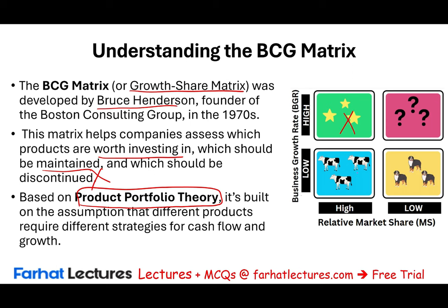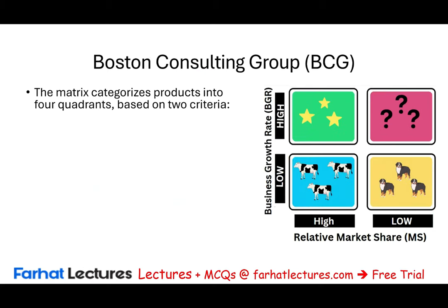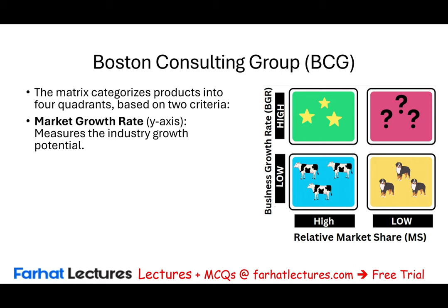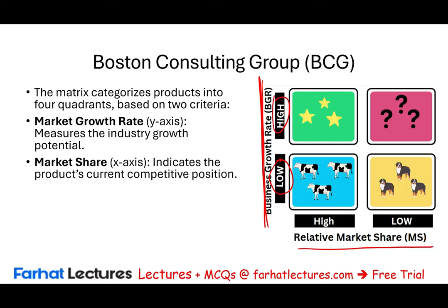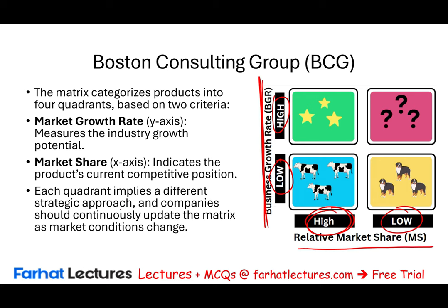Let's understand how to read this matrix. On the Y-axis we have the business growth rate — low to high. On the X-axis we have relative market share — high to low. High market share means you control a larger portion of the market. Each quadrant implies a different strategic approach, and companies should continuously update the matrix as market conditions change.